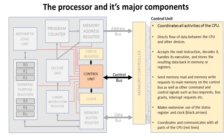One of the most important components is the control unit. If you think of the CPU as the brain of a computer, the control unit is like the cerebral cortex — the most important part. It coordinates all activities of the CPU, directs the flow of data between the CPU and all other devices including memory, accepts the next instruction, decodes it, handles its execution, and stores the resulting data back in memory or in various registers.